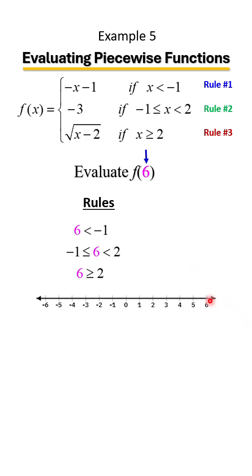It's saying that 6, which is way over here to the right, is between negative 1 and 2. And that's not true either. Let's move on to the last inequality.